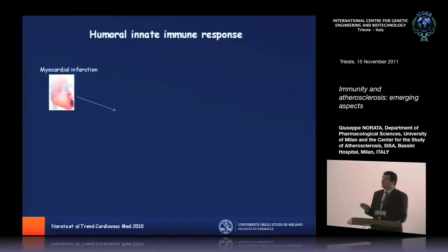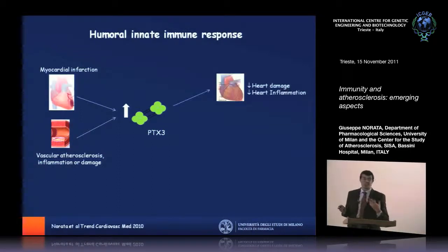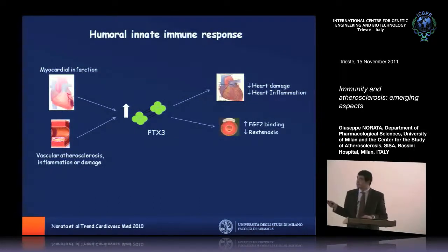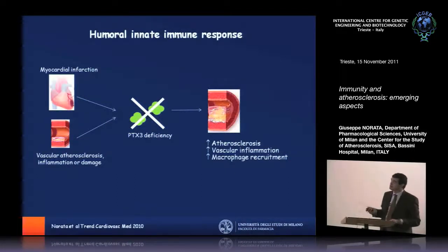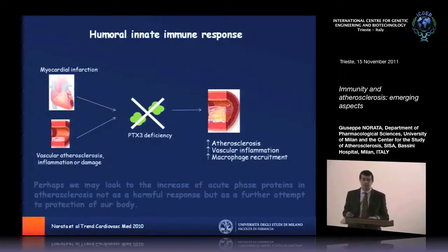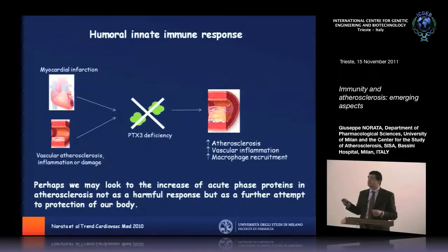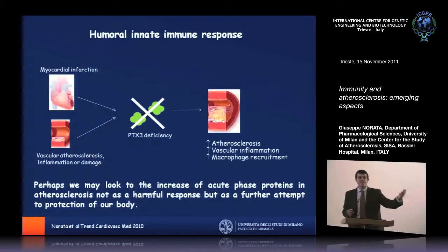To summarize the first part: myocardial infarction, vascular atherosclerosis, inflammation, or damage increases the release of PTX3 in the blood — it's a good biomarker. PTX3 probably reduces heart damage, reduces heart inflammation, and modulates and reduces restenosis. In the presence of PTX3 deficiency, you observe increased atherosclerosis, increased vascular inflammation, and increased macrophage recruitment. The take-home message is that the increase of acute phase proteins observed in atherosclerosis is not a harmful response, but likely a further attempt by our body to protect against over-activation of the immune inflammatory response.